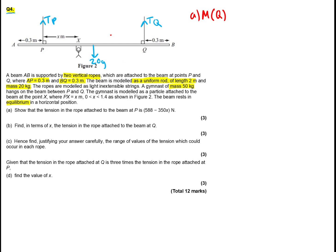If the whole rod is 2m, we know from here to here must be 1.4m. We've got a gymnast of mass 50g, so let's label that 50g. The beam rests in equilibrium in the horizontal position — show that the tension in the rope attached to the beam at P is this expression.